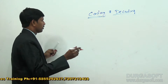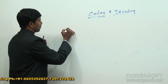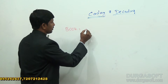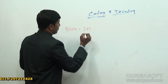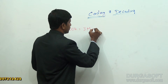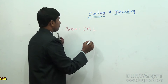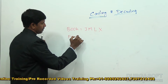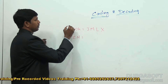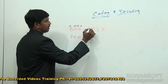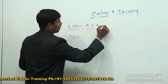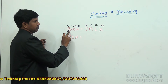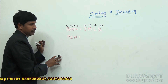Everything we discussed so far is related to the value of each and every alphabet. Let's take one more example. If book is coded as J-M-L-X, what is the code for pen? The values are: B=2, O=15, O=15, K=11, and the coded values are J=10, M=13, L=12, X=24.